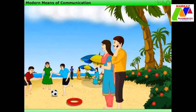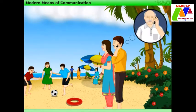Sachin and Mina have reached the Andaman and Nicobar Islands. Sachin calls his father to inform him that they have reached their destination.